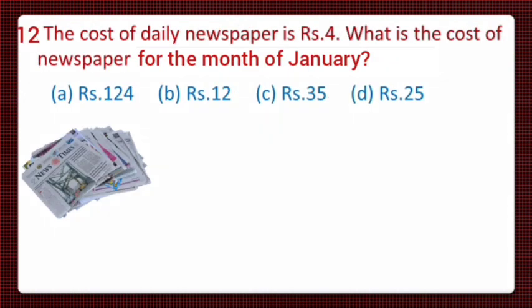Next, question number 12 is: the cost of a daily newspaper is rupees 4. What is the cost of the newspaper in the month of January? And 4 options are given. Option A is rupees 124, Option B is 12 rupees, C is 35 rupees, and D is 25 rupees.